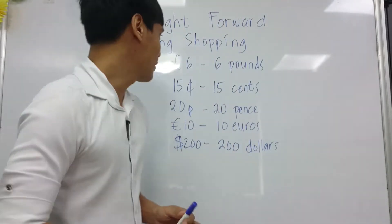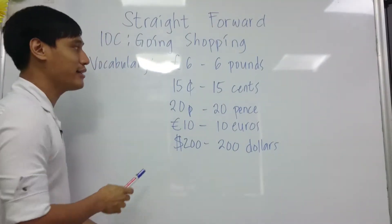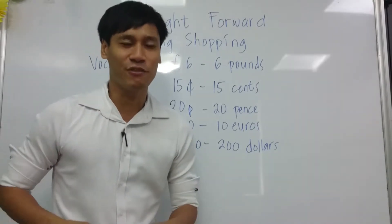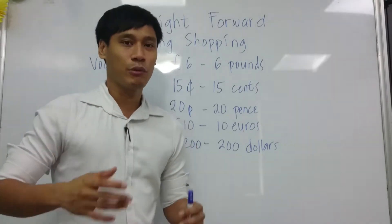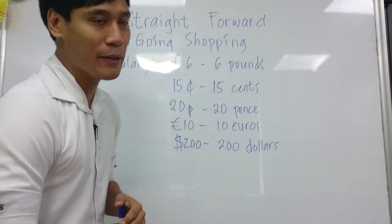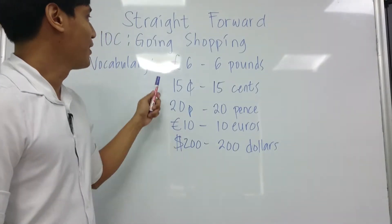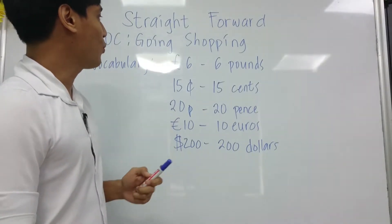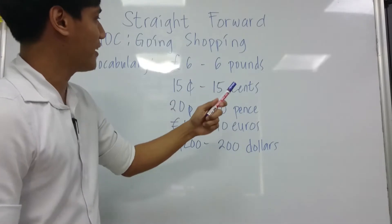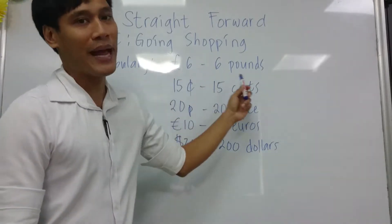Today's vocabulary is about money — the currency of money. We will practice the pronunciation on how to read money. So the first one is like an L with a line, and that is pounds.